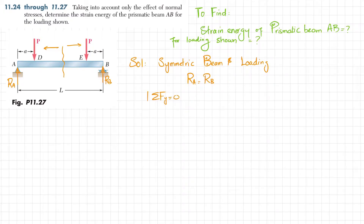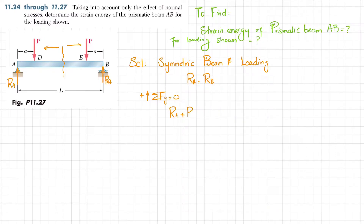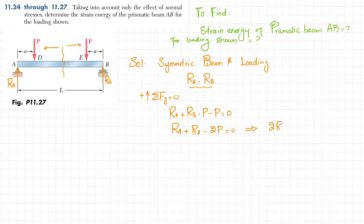Applying equilibrium: the sum of all forces along the y-direction must equal zero, taking upward forces as positive. RA plus RB minus P minus P equals zero. Since RA equals RB, we substitute: 2RA minus 2P equals zero, giving us RA equals P. Therefore RA equals RB equals P.